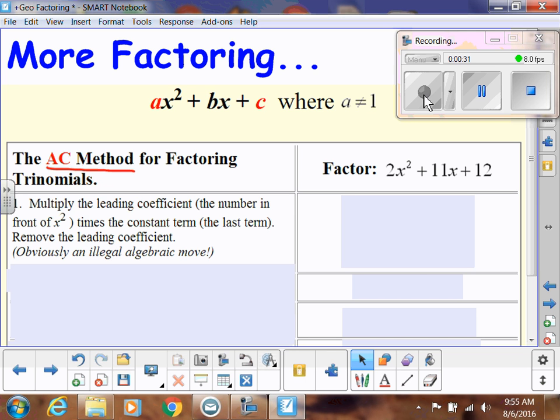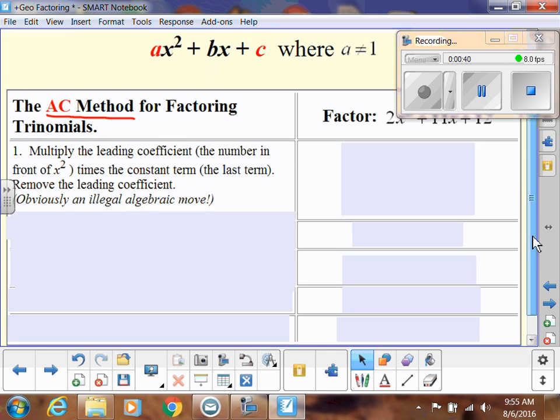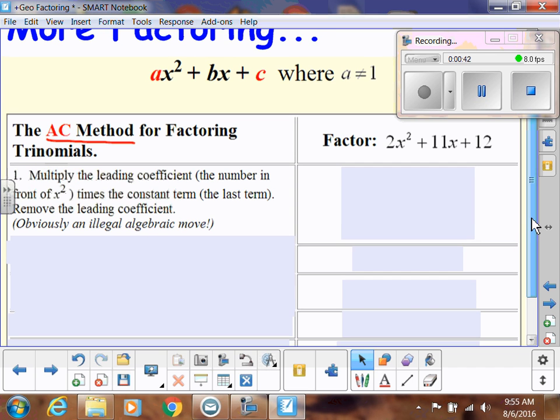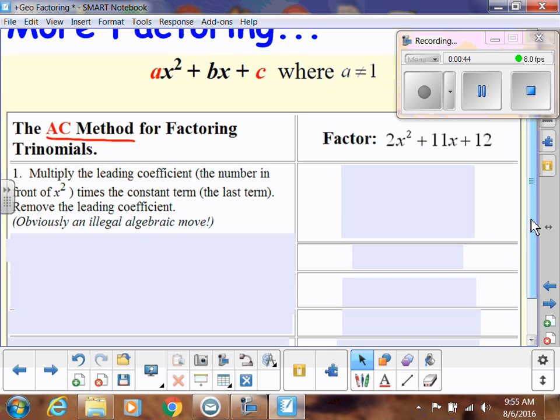So I'm going to just show you how to do it, and then I'm going to show you why it works. First step: multiply the leading coefficient, the number in front of x², times the constant term, the last term, and remove the leading coefficient.